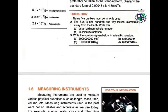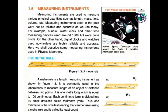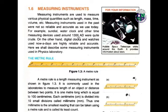Measuring instruments are used to measure various physical quantities such as length, mass, time, and volume. Measuring instruments used in the past were not so reliable and accurate as those used today. For example, sundials, water clocks, and other time-measuring instruments used around 1300 AD were quite crude. On the other hand, digital clocks and watches used nowadays are highly reliable and accurate.